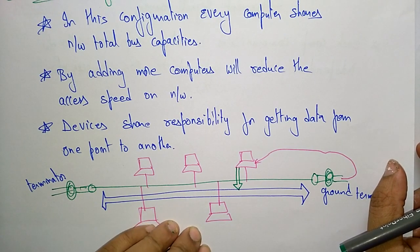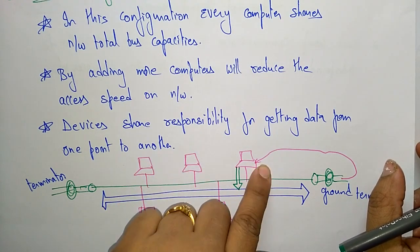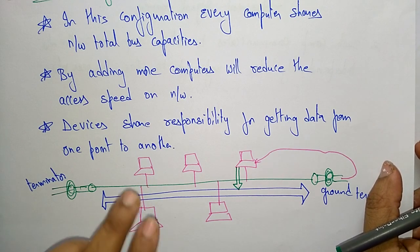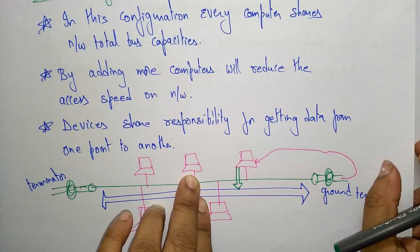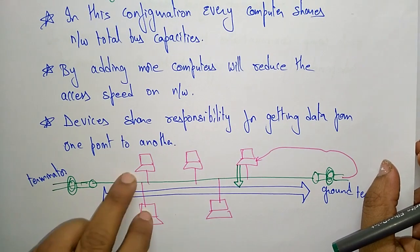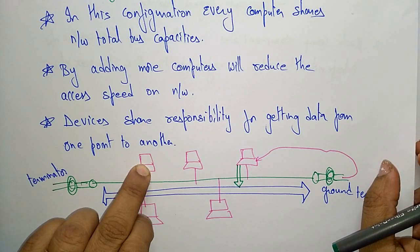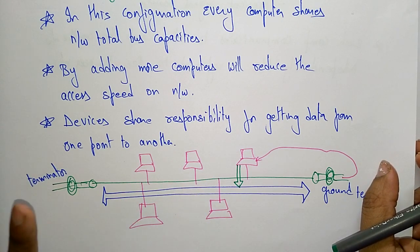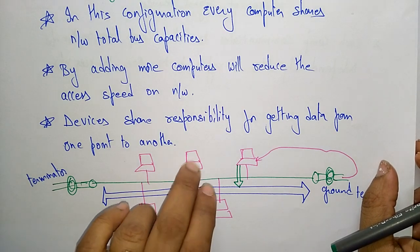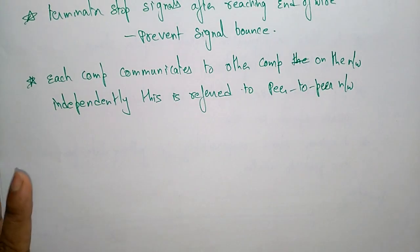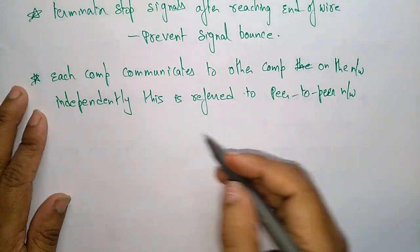The bus topology follows a peer-to-peer communication system. Each computer communicates with other computers on the network independently — this computer does not depend on that computer, and that one does not depend on this one. Each is independent, communicating with another when required. There is no dependency relationship, so this system is called a peer-to-peer network system.